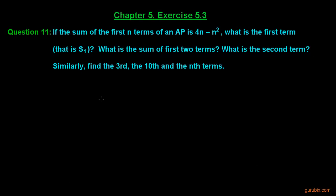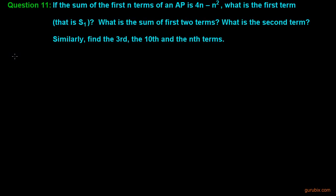Let us solve question number 11 of Exercise 5.3 of Chapter 5. This is a very important question. It says: if the sum of the first n terms of an AP is 4n minus n squared, then find the first term, the sum of the first two terms, the second term, the third term, the tenth term, and the nth term of the AP.